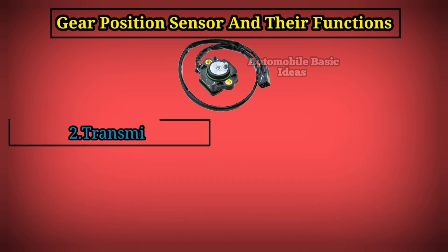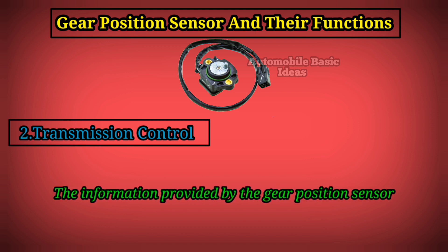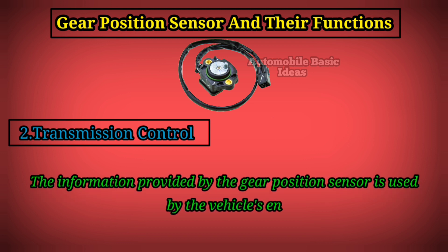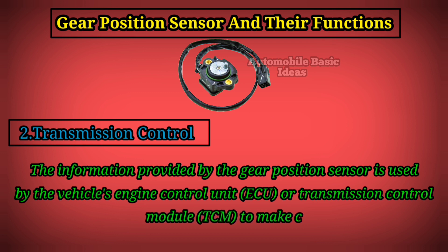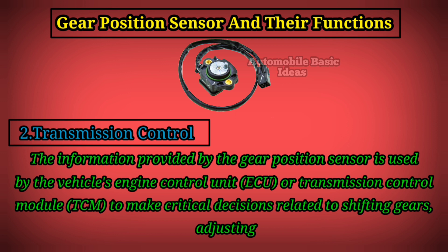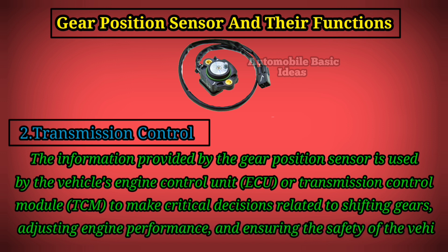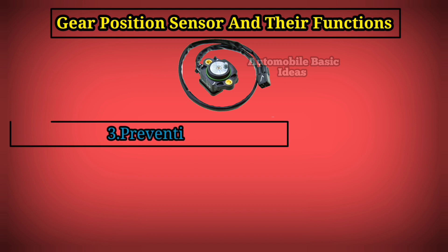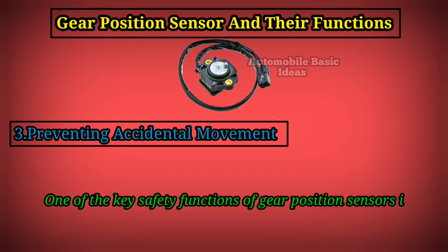Two: transmission control. The information provided by the gear position sensor is used by the vehicle's engine control unit (ECU) or transmission control module (TCM) to make critical decisions related to shifting gears, adjusting engine performance, and ensuring the safety of the vehicle.